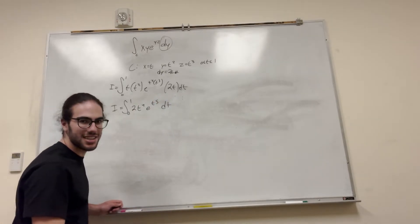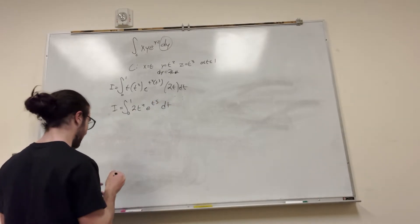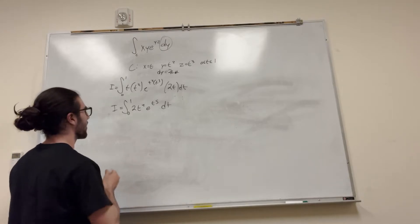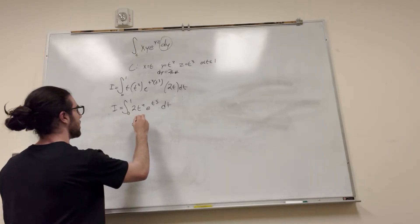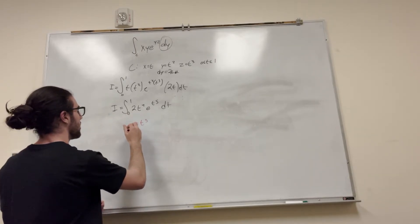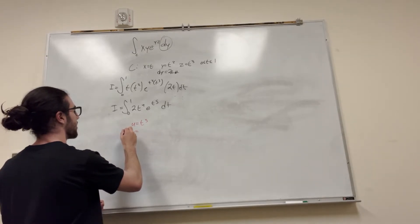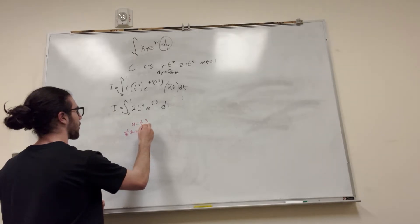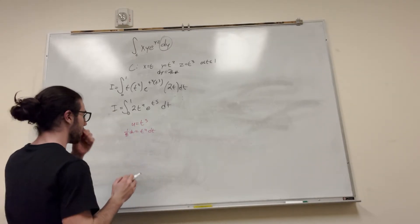And now you're looking at this and saying, that's a u-sub right there. So yeah, we're going to do a u-sub — we're going to figure it out. So u is equal to t to the fifth. du is equal to 5t to the fourth dt.